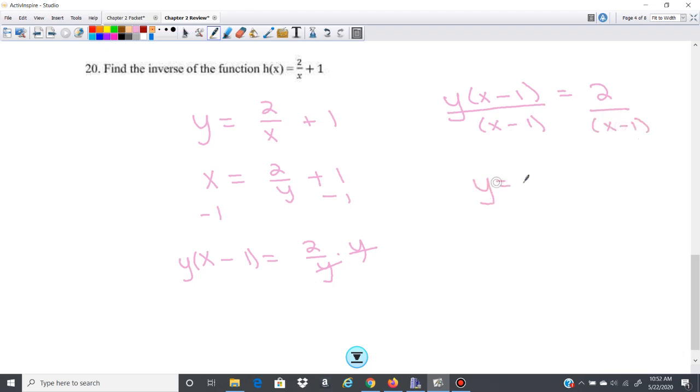So y equals 2 over x minus 1. That's going to be your inverse function, and you're going to write that as f to the negative 1 of x.